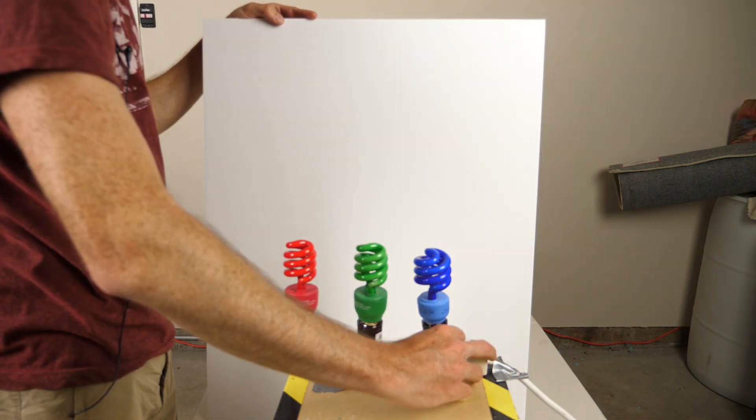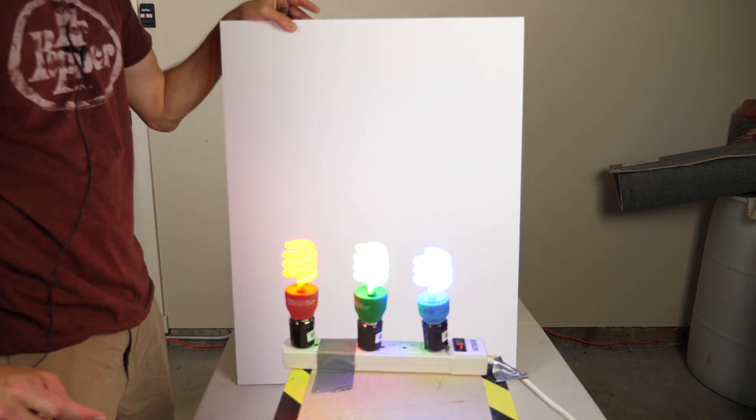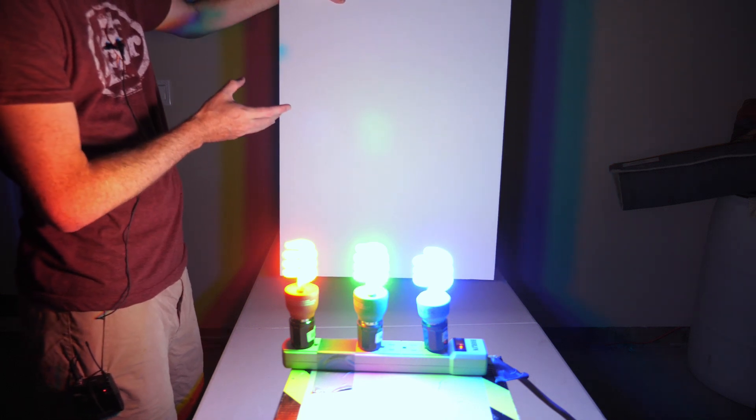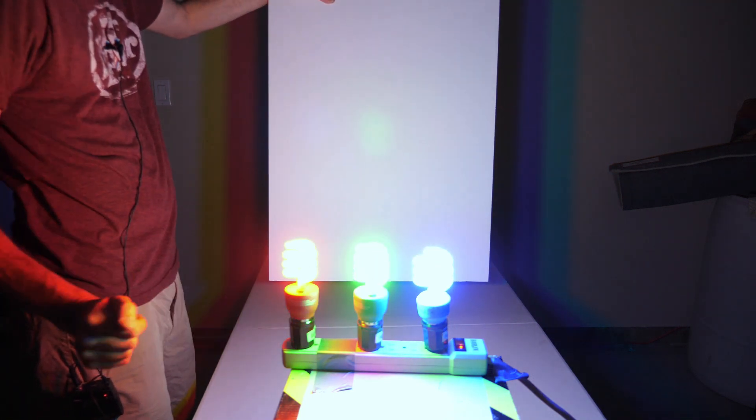So for example, if I turn these on and then turn off my background lights, you can see that this poster board now still appears white, even though I have three different colors of light here.